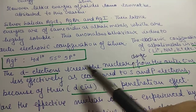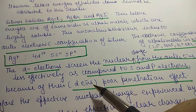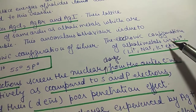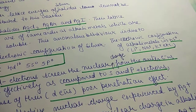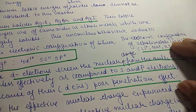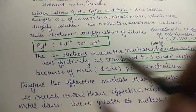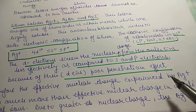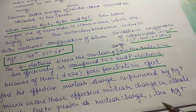The d-electrons screen the nuclear charge from outer electrons less effectively compared to s and p electrons, because d-electrons have poor penetration effect. In alkali metals, s and p orbitals shield the outer electrons effectively — they have good penetration. As a result, the net effective nuclear charge experienced by Ag+ is much greater than in alkali metal ions, due to the poor shielding effect of d-electrons.